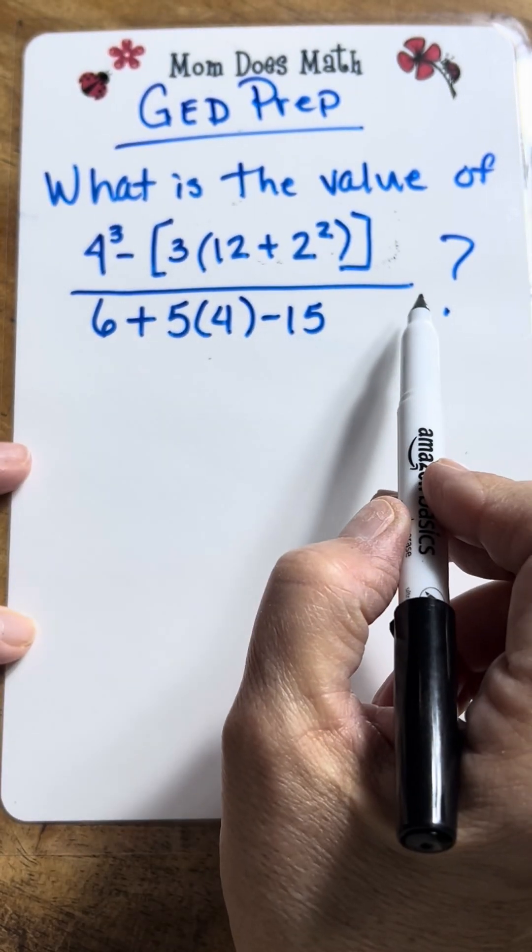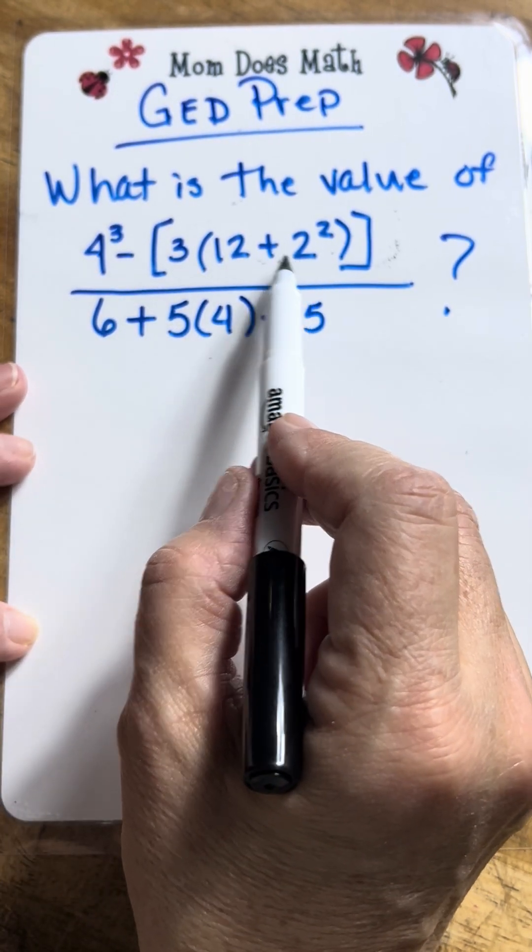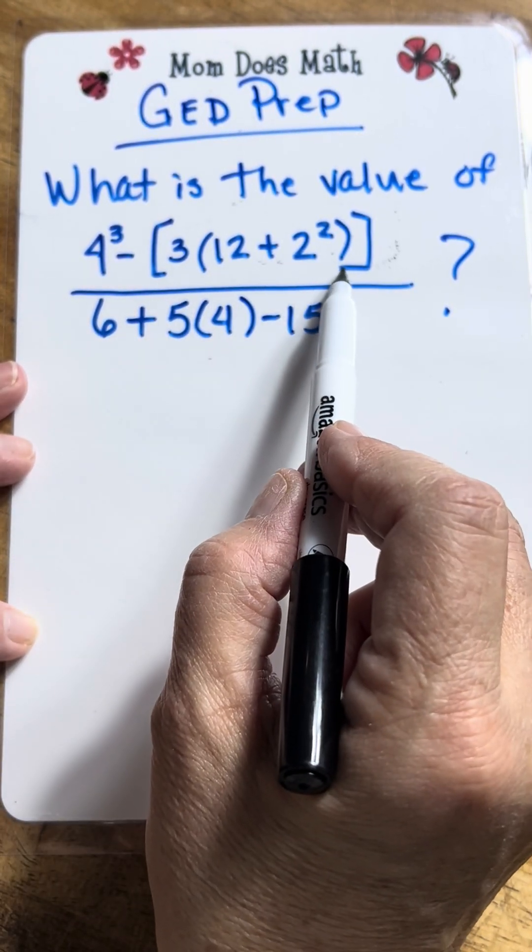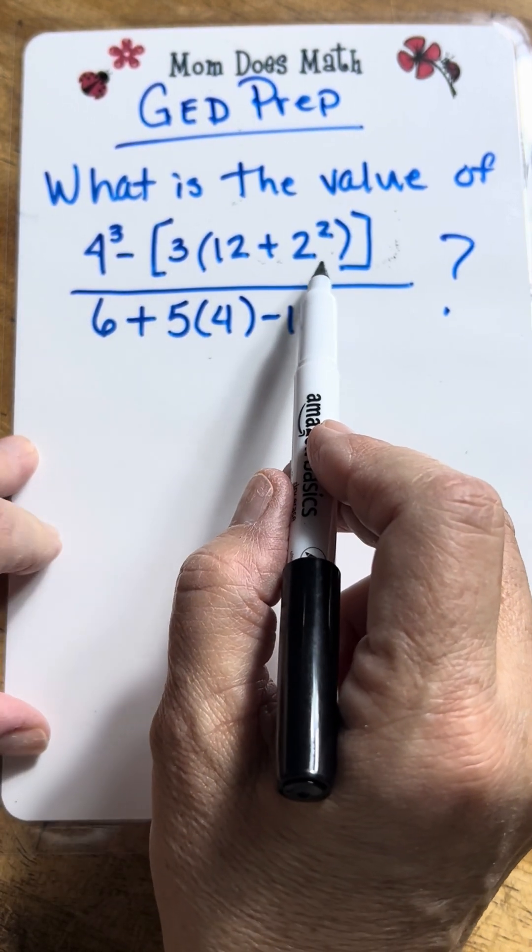Let's find the value of this expression. So, we're going to go to the inside of the parentheses first. Brackets and parentheses are the same thing, actually. We just alternate them so it's easier to see what's paired up.